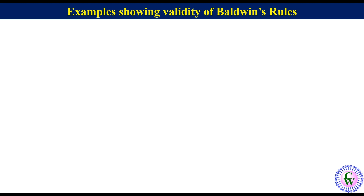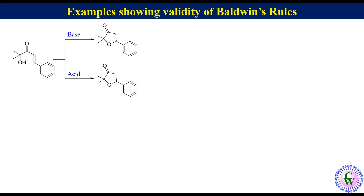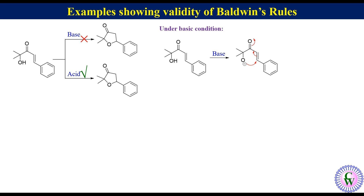Let's find the explanation for the cyclization of an alpha-beta unsaturated hydroxyketone under basic and acidic conditions to produce a cyclic structure. It has been found that the cyclization doesn't work under basic conditions but works under acidic conditions. Under basic conditions, the alcoholic group reacts with the base to produce an anion, which can undergo intramolecular 1,4-addition — a 5-endotrig cyclization. According to Baldwin's Rule, 5-endotrig is disfavored, so this cyclization will not happen under basic conditions.